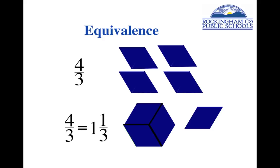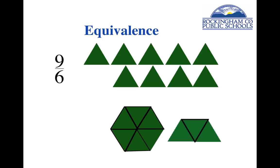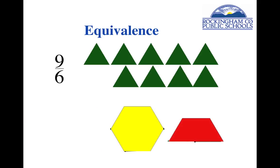Some students don't like that a shape can have multiple names, but we have multiple names for nearly everything — teachers have multiple names. I go by Mr. Hill in class, but at home my grandchildren call me granddaddy. Equivalence just means two different names for the same fraction. Here's another example: nine sixths. If you take nine green triangles, you could arrange six of them into the shape of a yellow hexagon and three of them into the shape of a red trapezoid, giving you one and a half. So nine sixths is equivalent to one and a half.